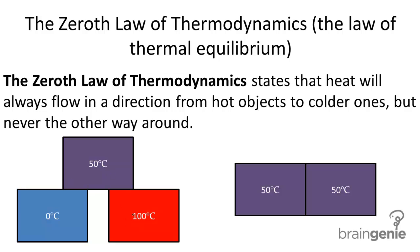If we look at this picture here, we have the 100 degree block in contact with the 50 degree block, and the 50 degree block in contact with the zero degree block. Heat will always flow from the hotter object to the colder object, so heat would flow in this direction between these two blocks, since 100 is hotter than 50, and would flow from 50 to zero, since 50 is hotter than zero.